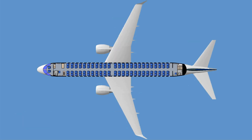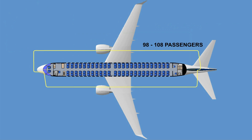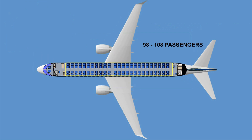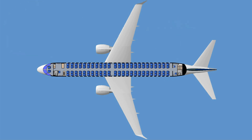The cockpit can accommodate two crew members in the pilot seats and one observer on the jump seat. Two or optionally three flight attendants and, depending on the aircraft configuration, 98 up to 108 passengers can be seated in the cabin. There are two galleys and two toilets, one of each in the front and the aft sections of the cabin. The cabin also features a wardrobe built next to the front passenger entrance.